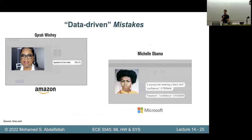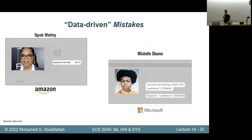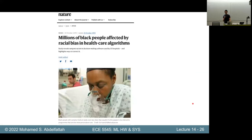People have shown this example again and again for other minorities too. For example, for dark-skinned people being misclassified: an Amazon model classified Oprah as appearing to be male with 76% confidence, and classified Michelle Obama as wearing a hairpiece with 93% confidence. When this starts becoming serious — not just playing around — it can affect many people. A Nature paper exposed that many Black people are affected by racial bias in healthcare algorithms, which could lead to misdiagnosis and death.